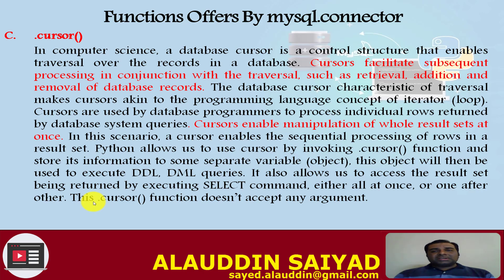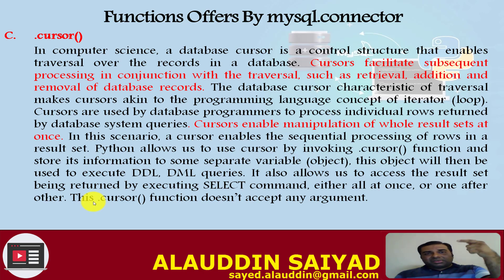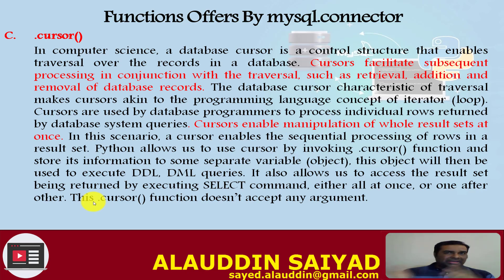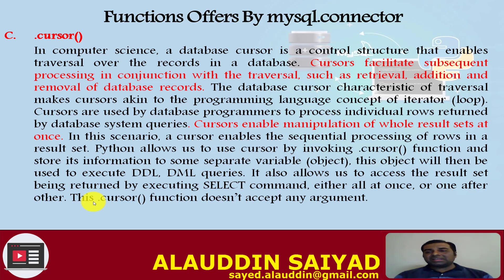In computer science, a database cursor is a control structure that enables traversal over records in a database. If there are 10 records, the cursor reads from the first to the last — this movement is called traversal. The cursor facilitates subsequent processing in conjunction with traversal, such as retrieval, addition, and removal of database records. Cursors are used by database programmers to process individual rows returned by the database system.